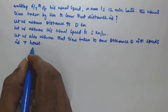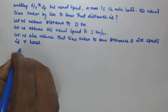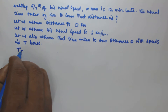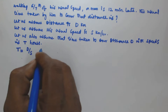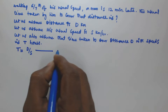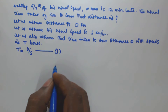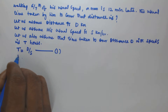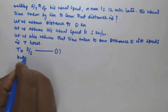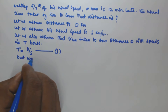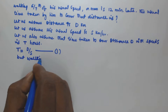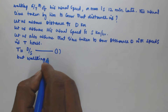So then we can write: time is equal to distance by speed, that is t = d/s. Let us call this Equation 1.